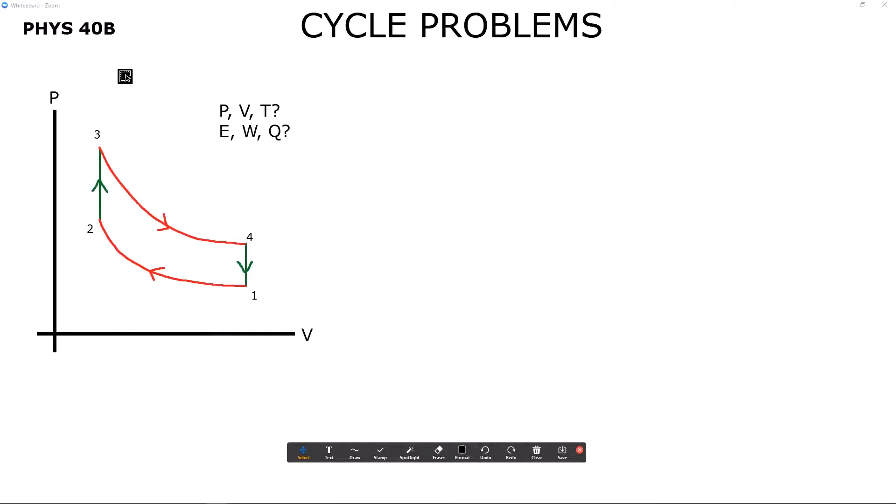First off, all these problems are about a cycle of some sort. Here on the PV diagram I've drawn out an Otto cycle. It doesn't really matter which cycle it is because hopefully you should be able to do this for all types of cycles, not just ones that look familiar. The primary ones you'll be working with are probably the Otto cycle and the Brayton cycle, but don't get too married to the shape of one of these.